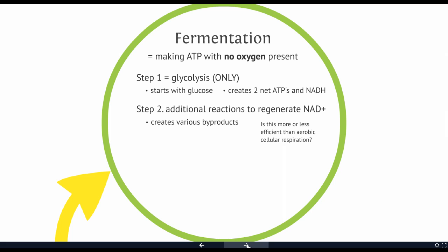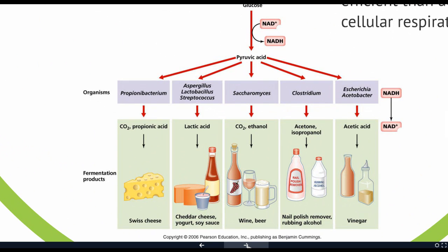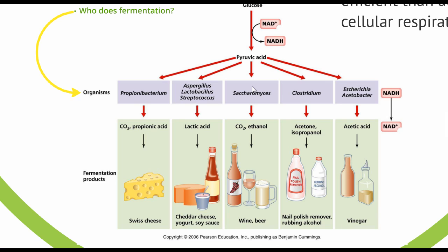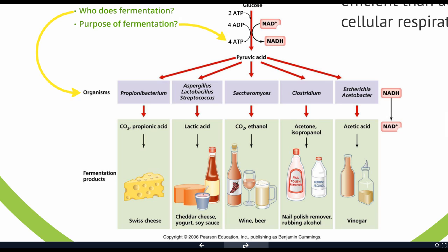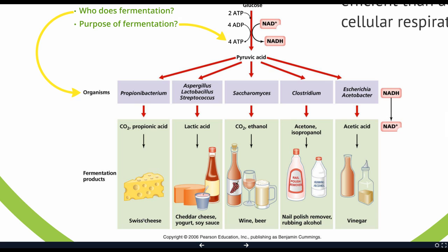But it's better than dying if there's no oxygen present. The organisms that do fermentation include different kinds of bacteria, fungi, and even our own human muscles when they're stressed to the point of not having enough oxygen. The whole point is to make ATP — the byproducts are interesting to us, but those are just byproducts. The purpose of fermentation is for bacteria or fungi to make the ATP they need to survive, grow, and reproduce.